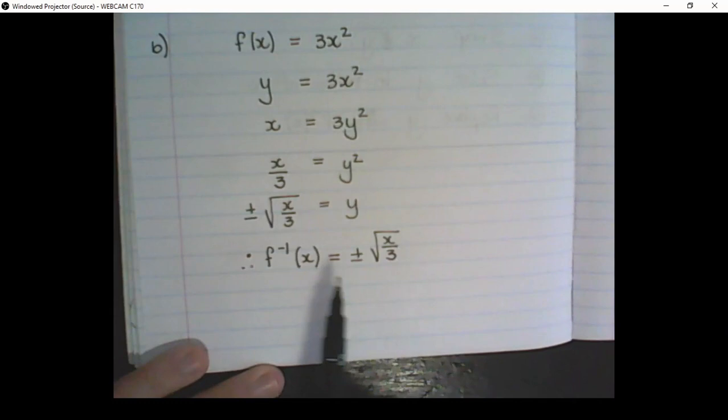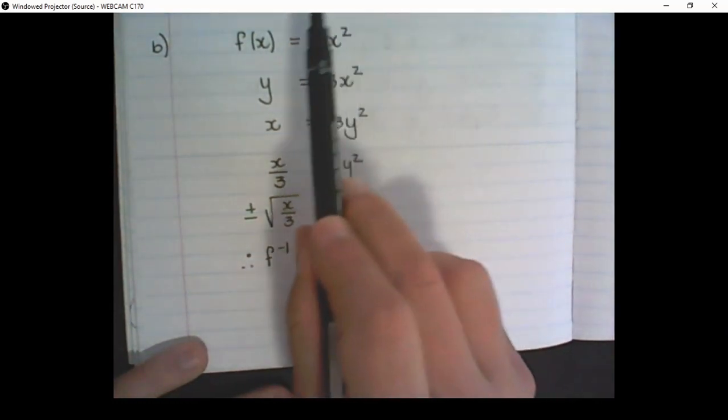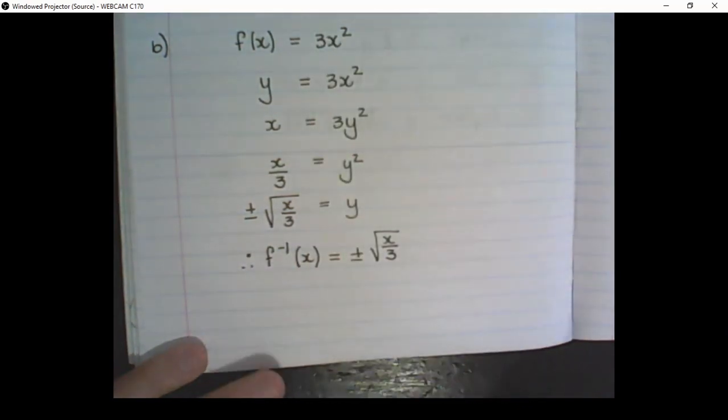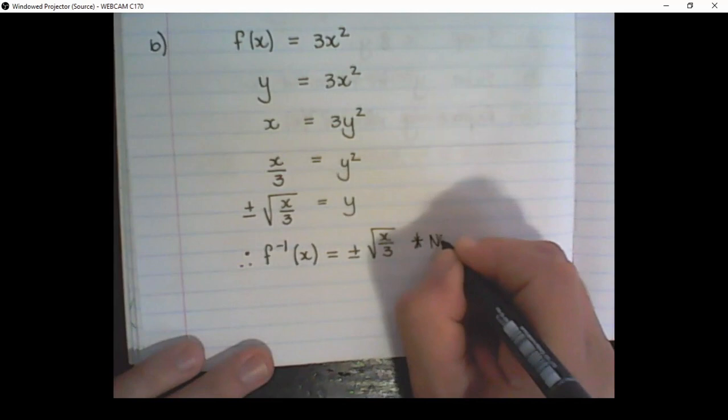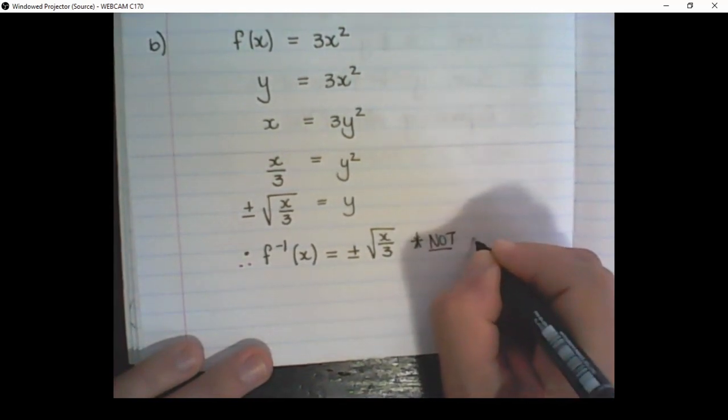The last step is rewrite y as the inverse of the function. Notice that even though we have an equation for the inverse of that parabola, this result, the inverse function, is not a function.